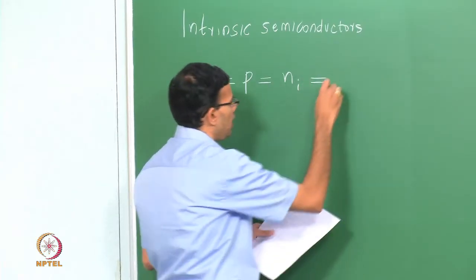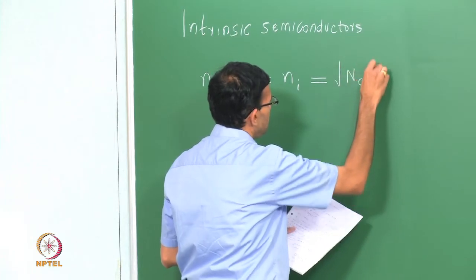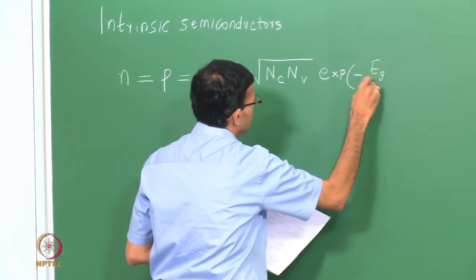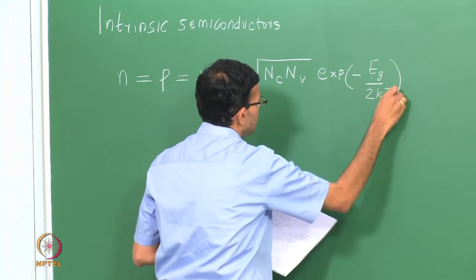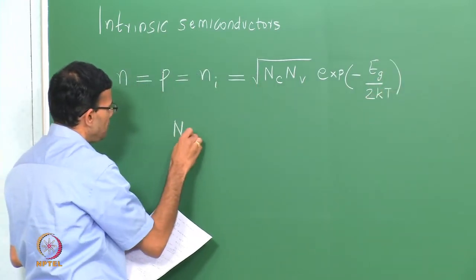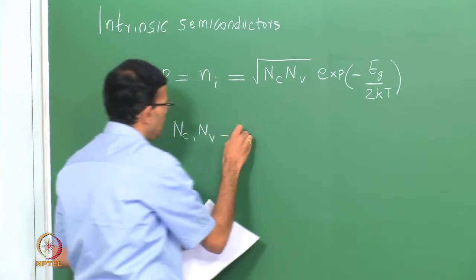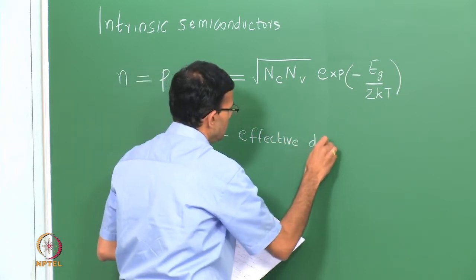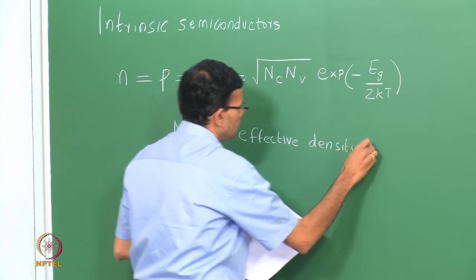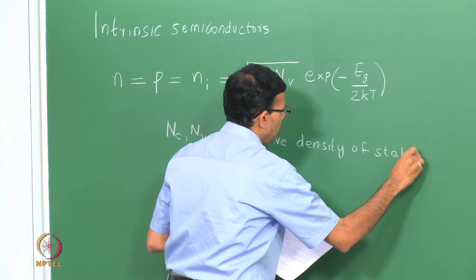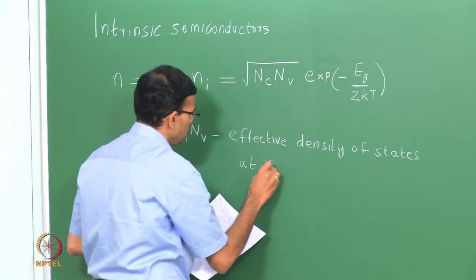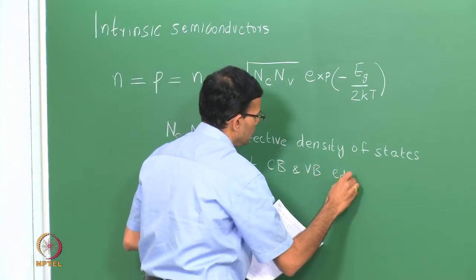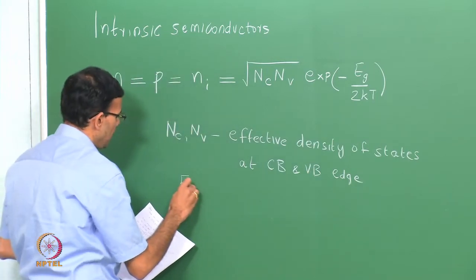The expression for ni is the square root of Nc·Nv times exponential of minus Eg over 2kT, where Nc and Nv are the effective density of states at the conduction band edge and the valence band edge, and Eg is the band gap of the material.